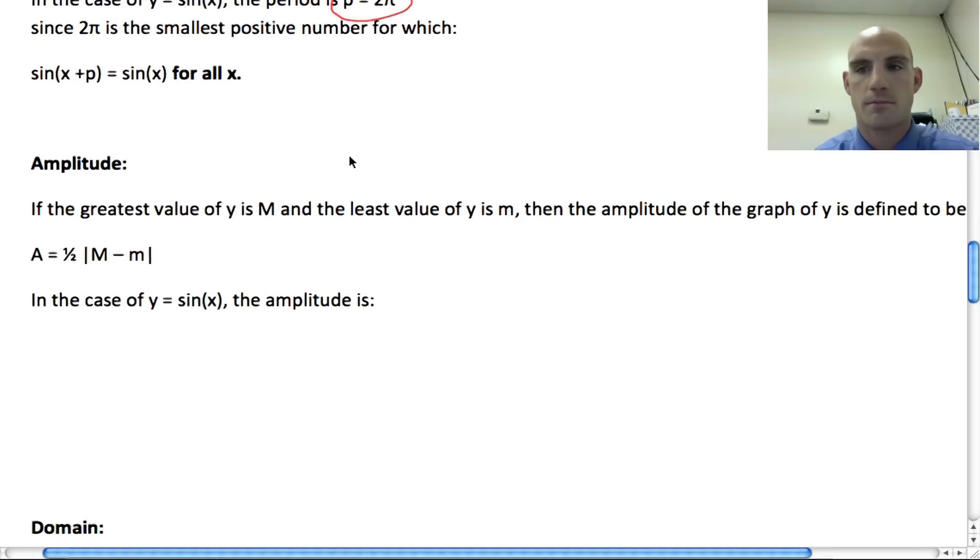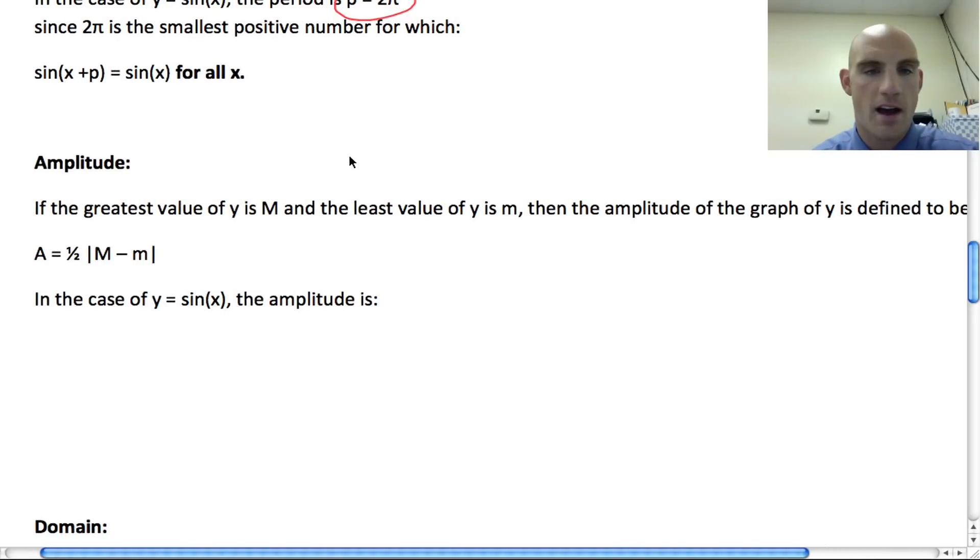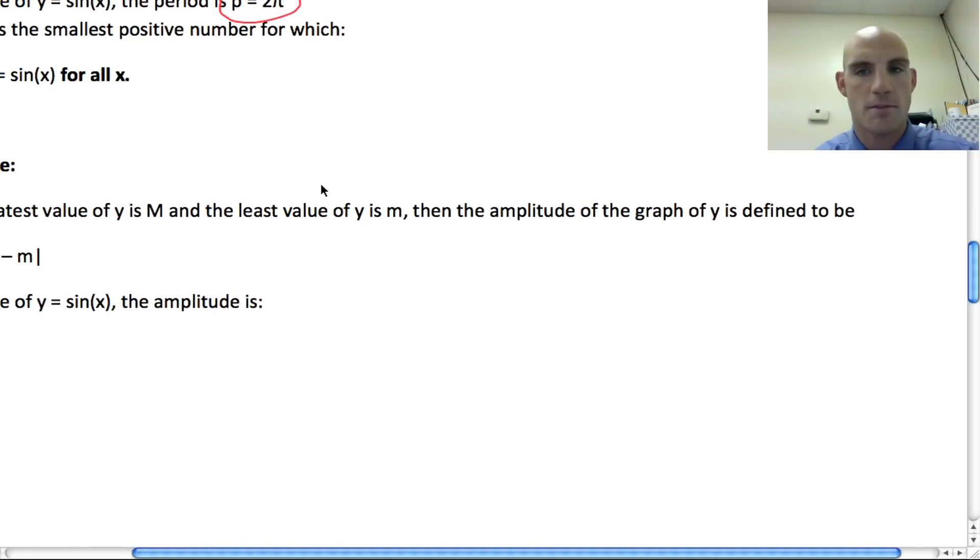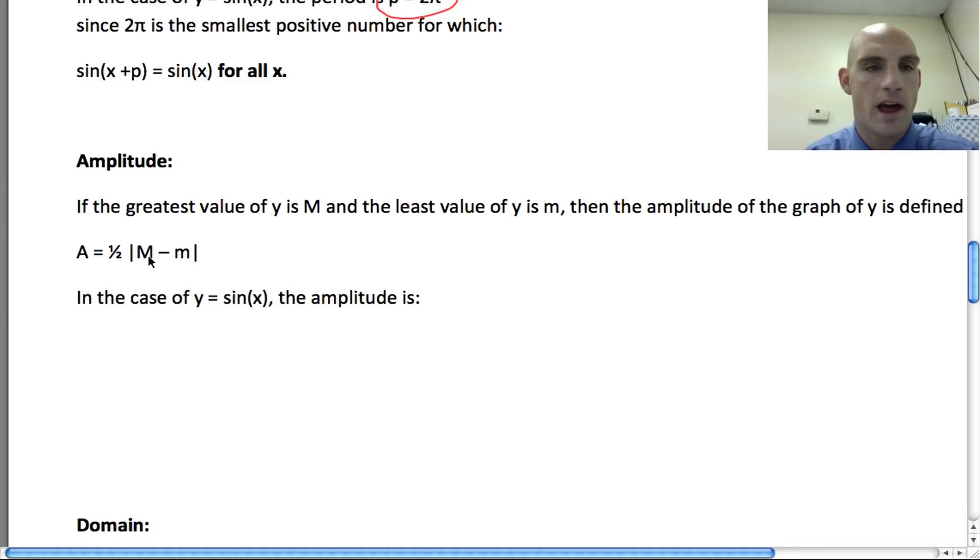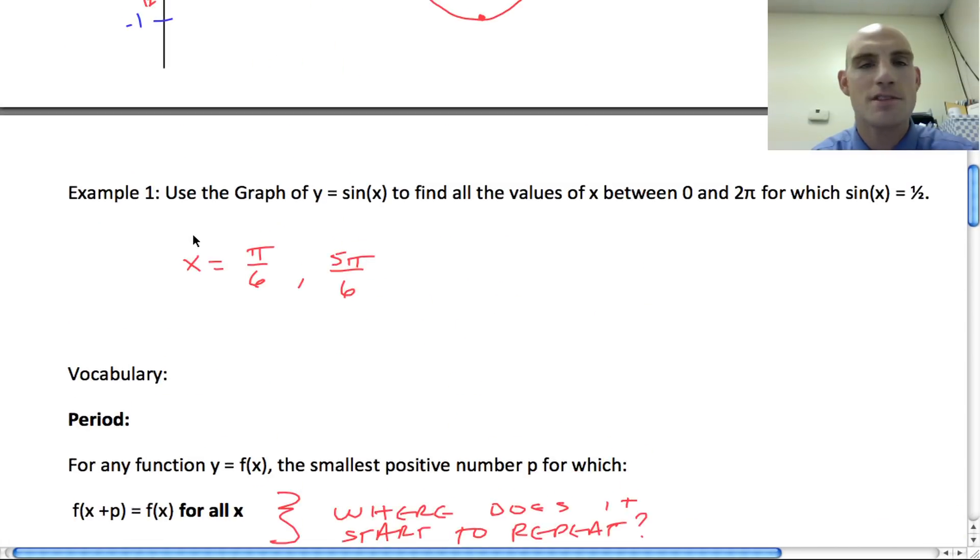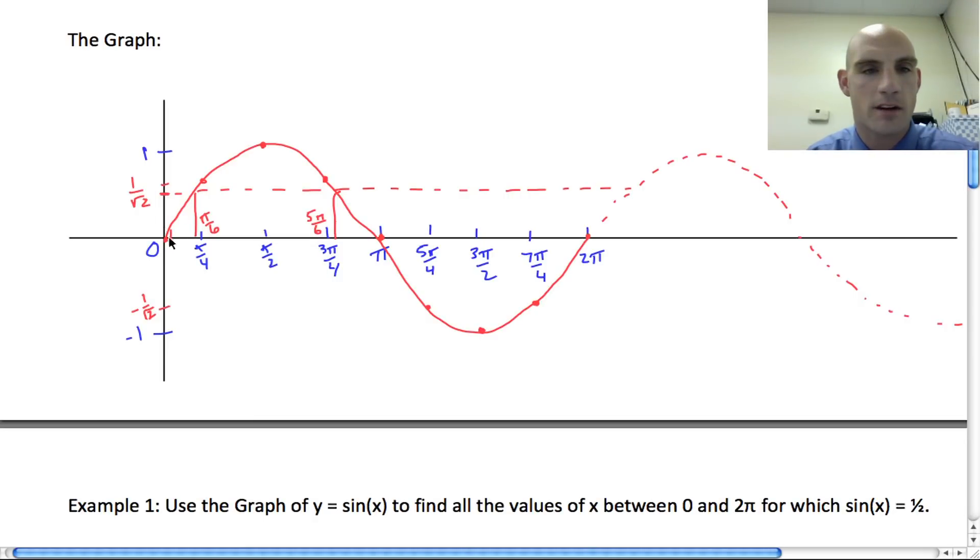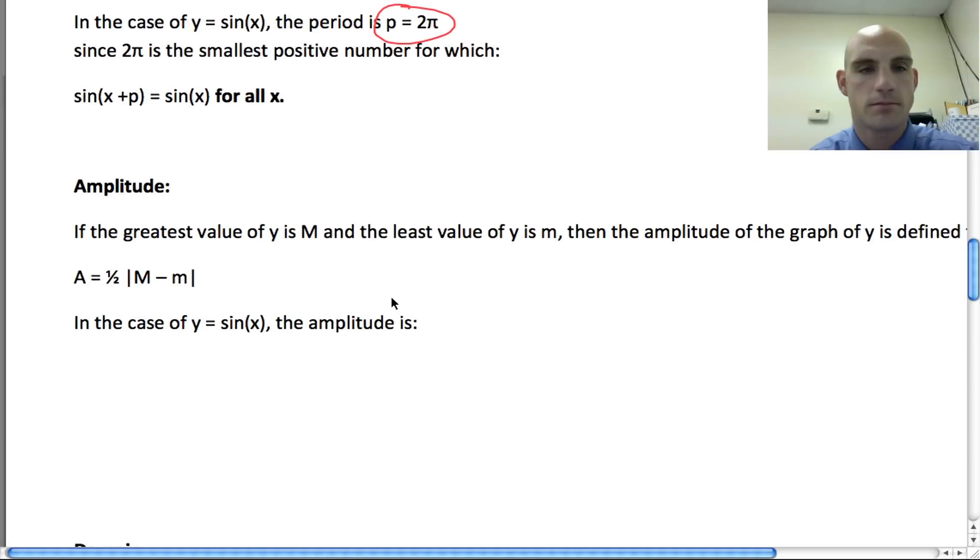The amplitude. If the greatest value of y is M, and the least value is m, then the amplitude of the graph of y is defined to be 1/2 of (M - m). Amplitude, all that means is, how far is it from the middle of the graph? So, I take the maximum of 1, the minimum of -1. I subtract them. So, it's going to be 1/2 times (1 - (-1)), which is 1/2 of 2 is equal to 1. So the amplitude is 1. How far is it from that midline of the graph?